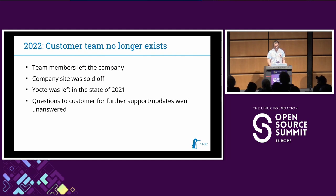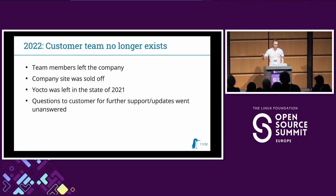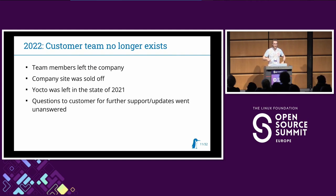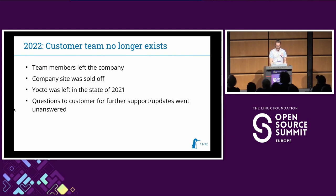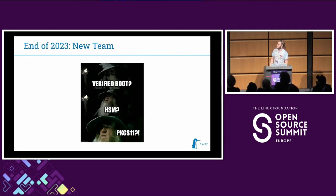Then 2022 came around and the customer team no longer existed. Team members left due to external or project pressure, and eventually the whole company side was sold to another company. The Yocto was left in the state from 2021. Questions about further development, Yocto updates, or documentation went unanswered — nobody was taking our calls because the project lead was sold off with the site. Then at the end of 2023, a totally new team appeared asking: 'Verified boot? HSM? PKCS11? What is this all about? We don't understand. Can you explain?'